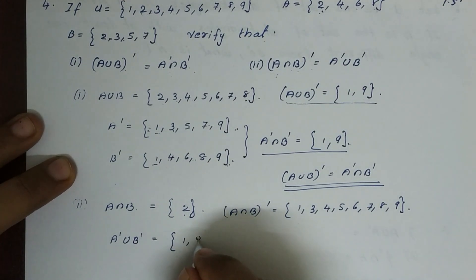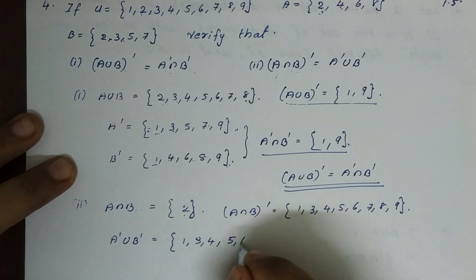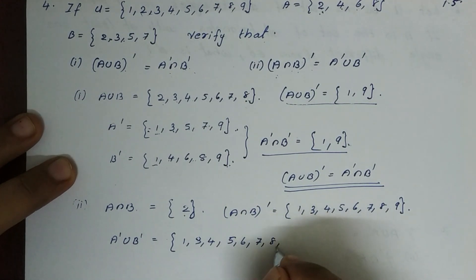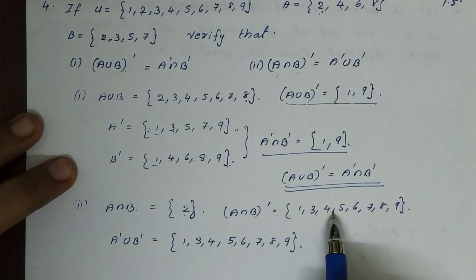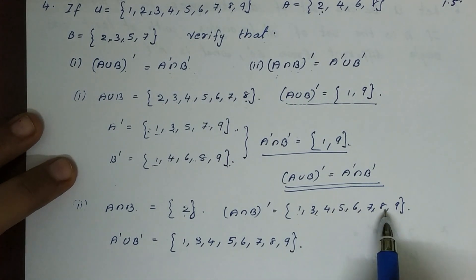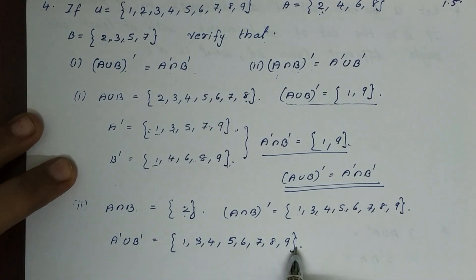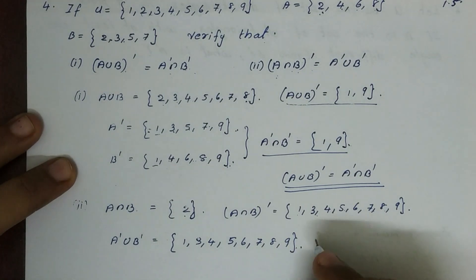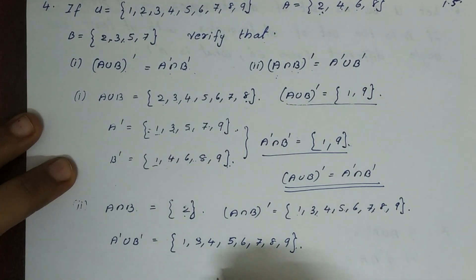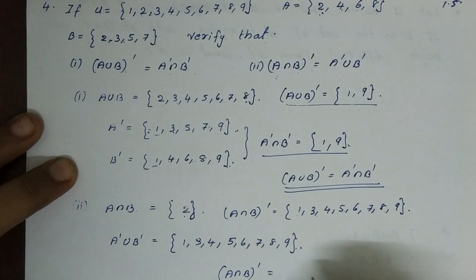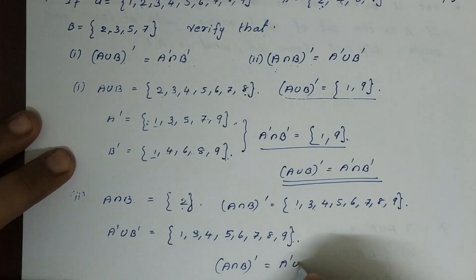A complement union B complement gives: 1, 3, 4, 5, 6, 7, 8, 9. So A intersection B complement is equal to A complement union B complement. This confirms De Morgan's law.